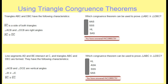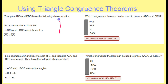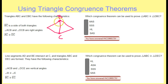So let's see if we can answer some questions now. Triangle ABC and triangle DBC have the following characteristics. Segment BC is a side of both triangles — let's try to draw this. Here's BC, and that's going to be a side of both triangles. BC is a side of both triangles, so I have ABC and DBC.